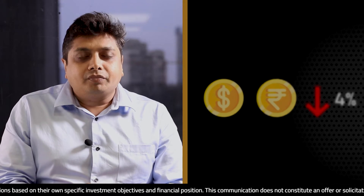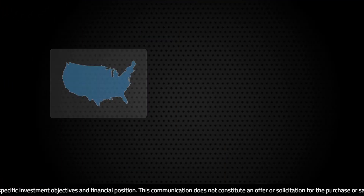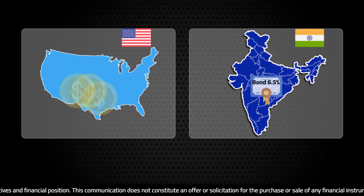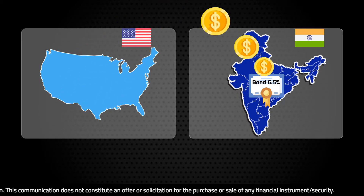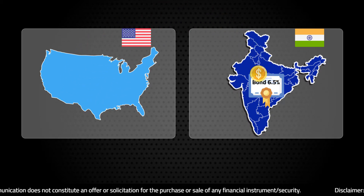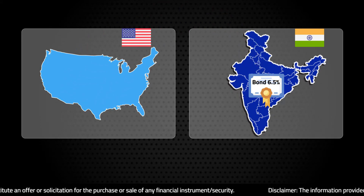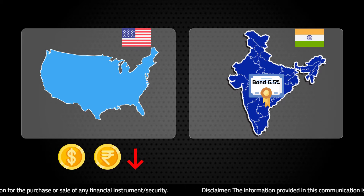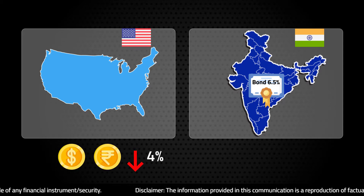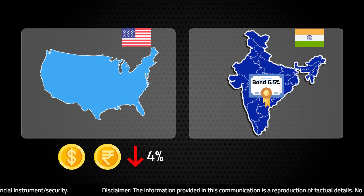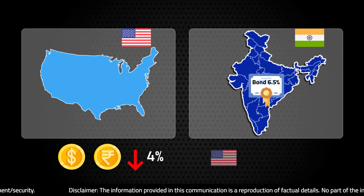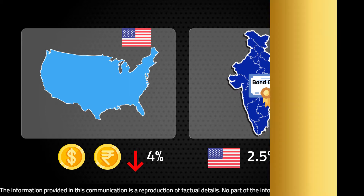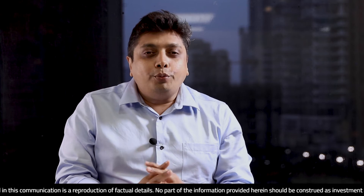For example, if a US investor invests into an Indian bond yielding about 6.5% per annum, and the depreciation of the rupee over a year is about 4%, the real rate of return for the US investor is only 2.5%.